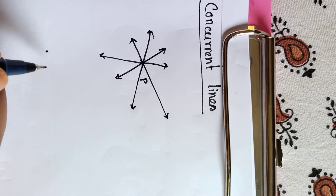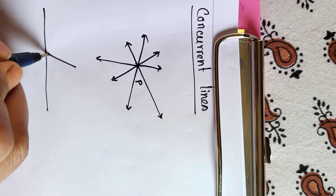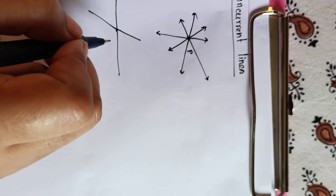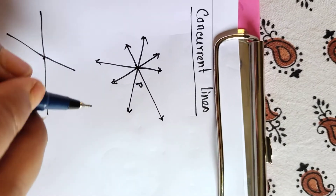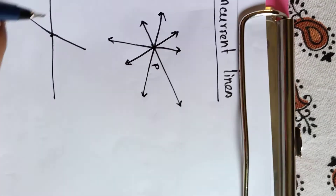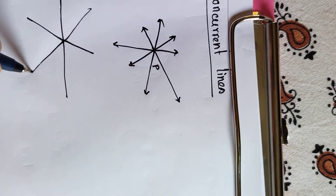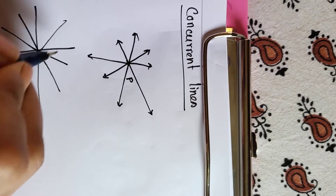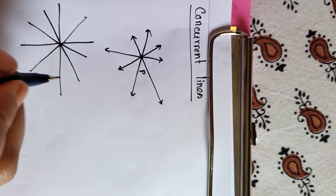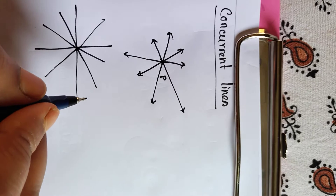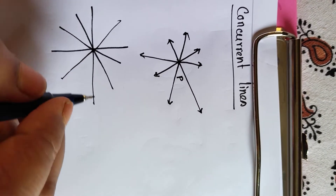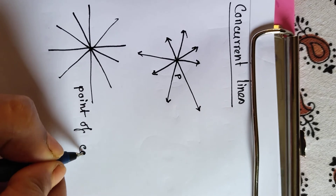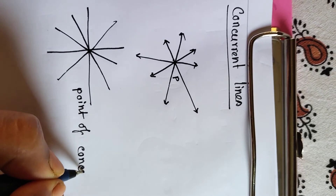Suppose this is a point P and two lines are passing through this point — then these lines will be called intersecting lines; these are not concurrent lines. Only when three or more lines pass through a same point will they be called concurrent lines and the point will be called the point of concurrence.